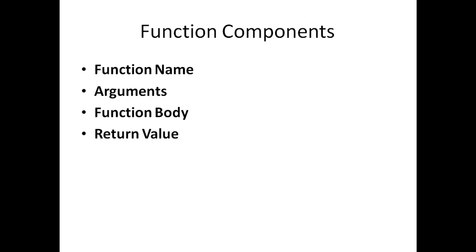Looking at the function name — it must be unique. Arguments are the input to the function; we may also call them parameters. Then the function body: in this section we define what the function can do, what action is to be taken. And the return value is any object or value that can be computed or calculated in the function.